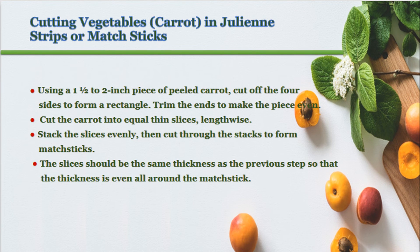Using a one and a half to two inch piece of peeled carrot, cut off the four sides to form a rectangle. Trim the ends to make the piece even, then cut the carrot into equal thin slices lengthwise. Stack the slices evenly, then cut through the stacks to form matchsticks. The slices should be the same thickness as the previous step so that the thickness is even all around the matchstick.